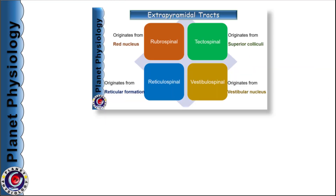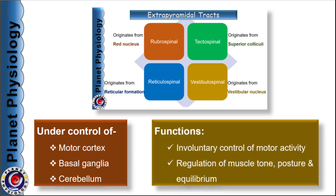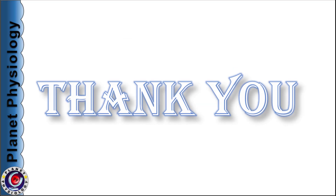To sum up, extrapyramidal tracts are the descending tracts other than pyramidal tracts. They arise from various motor nuclei in the brainstem and include rubrospinal, tectospinal, vestibulospinal and reticulospinal tracts. The extrapyramidal system is under control of motor cortex, basal ganglia and cerebellum, and is concerned with involuntary control of motor activities and regulation of muscle tone, posture and equilibrium. That's all for this session. Thank you for watching and see you in the next session.